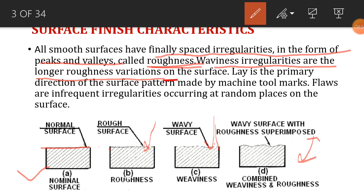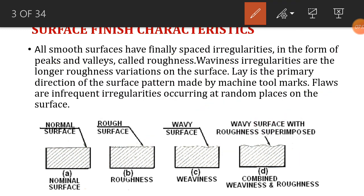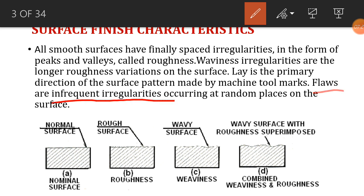Lay is not a quick change in surface finish. Lay refers to the direction of the dominant surface pattern. If we are taking an object and cutting it in a specific direction, that is the direction of lay. We can cut in different directions depending on the machining process, which produces irregularities and slots.